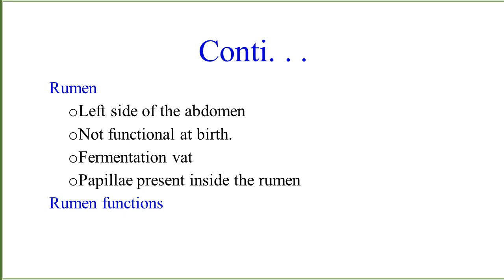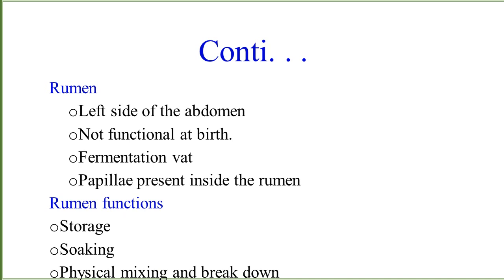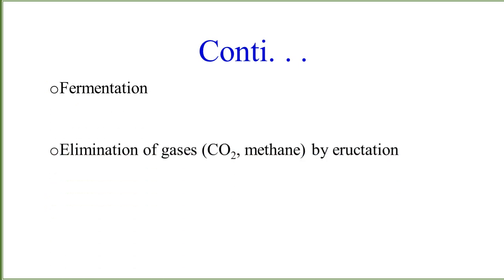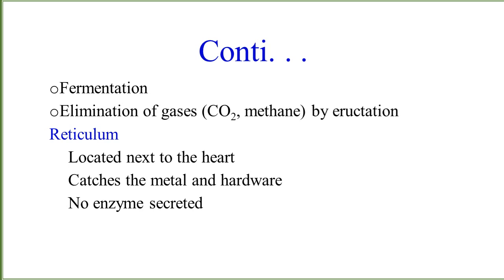The rumen is located on the left side of the abdomen and is not functional at birth. It has papillae present inside that help in digestion. The main functions of the rumen are to store feed material, soak that material, and physically mix and break it down. Additional functions include fermentation and elimination of gases by eructation.